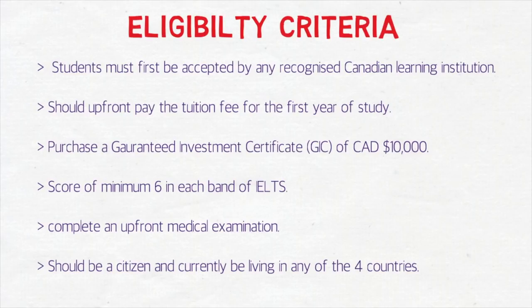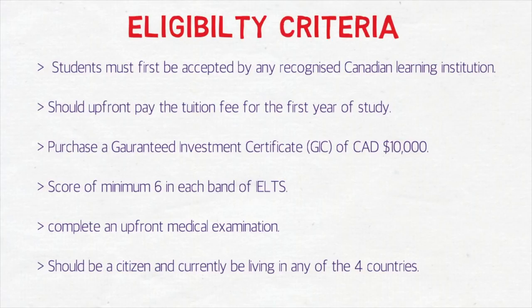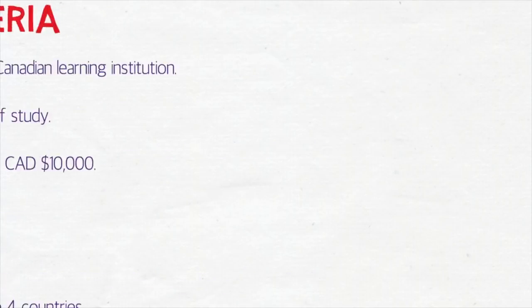A minimum score of six in each band of IELTS Academic is required. Previously under SPP it was 5.5 minimum per band with an overall of six, so this is not a massive change — scoring six per band is not a big deal. You must also complete an upfront medical examination. Additionally, you must be a citizen of and currently living in one of those four eligible countries. For example, if you are from India but living in Dubai or Singapore, you would not be eligible.